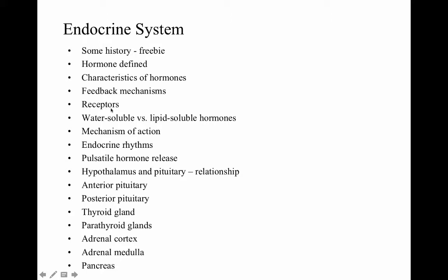We'll cover receptors that receive hormones, the difference between water-soluble and lipid-soluble hormone function, the mechanism of hormone action, endocrine rhythms, when hormones are released and how long they stay in the system, pulsatile hormone release, and the hypothalamus-pituitary relationship. Then we'll branch into the anterior and posterior pituitary, thyroid, parathyroid, adrenal cortex, adrenal medulla, pancreas, gonads, and thymus.